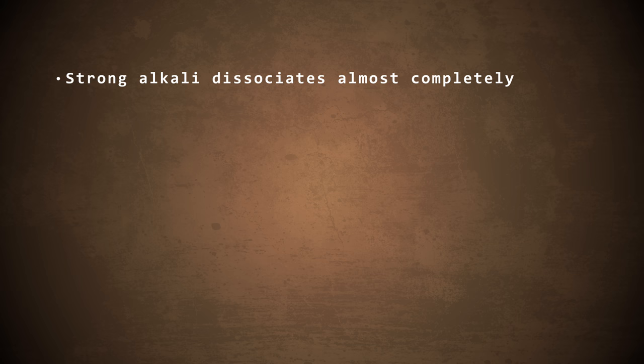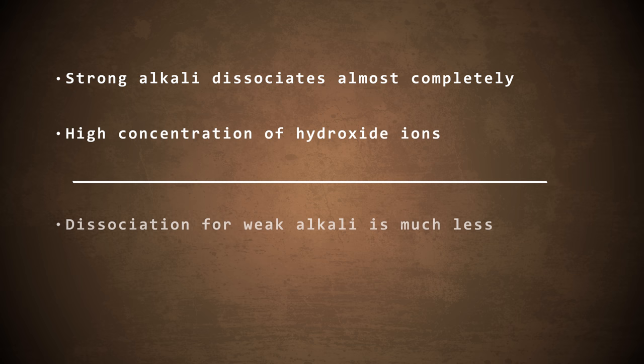So in conclusion, a strong alkali dissociates almost completely in water to give a high concentration of hydroxide ions, whereas dissociation for a weak alkali is much less and therefore the concentration of hydroxide ions is much lower.